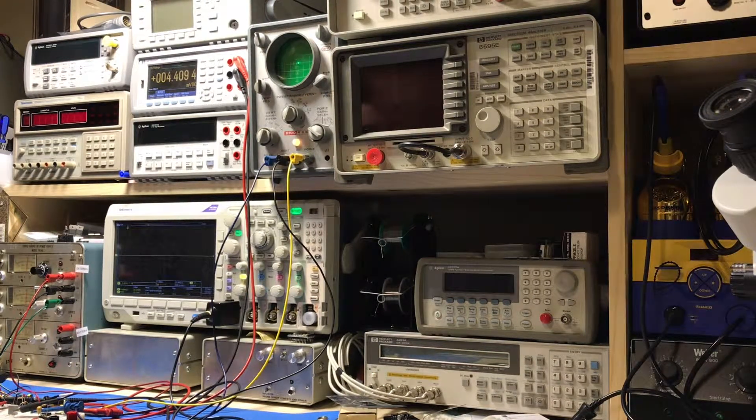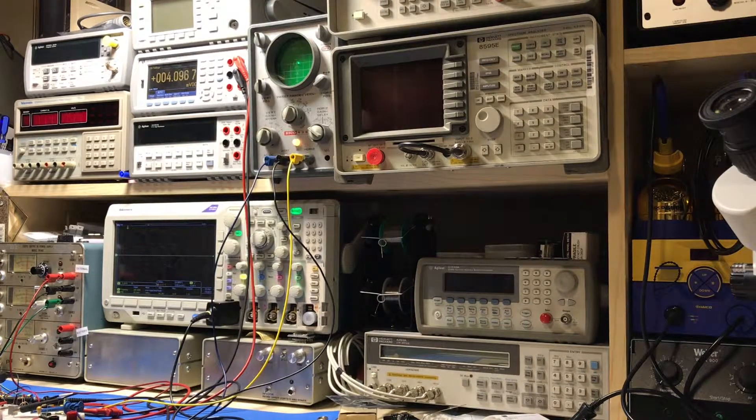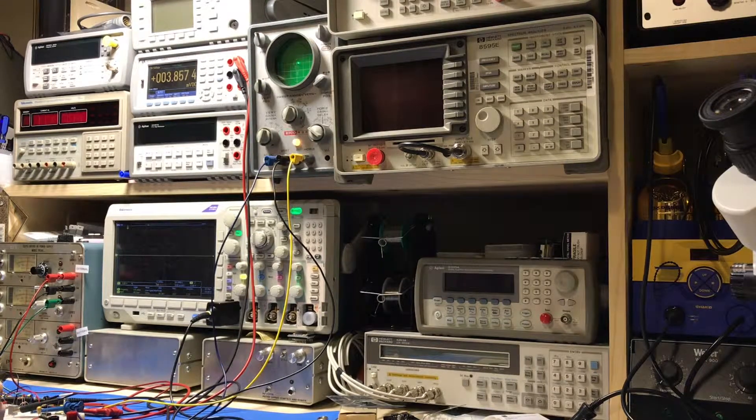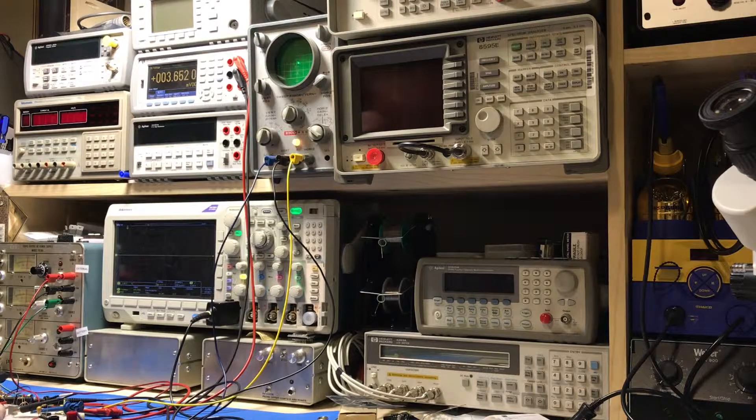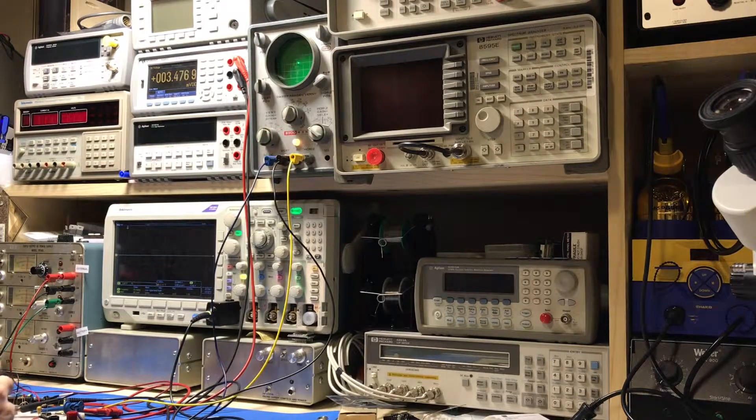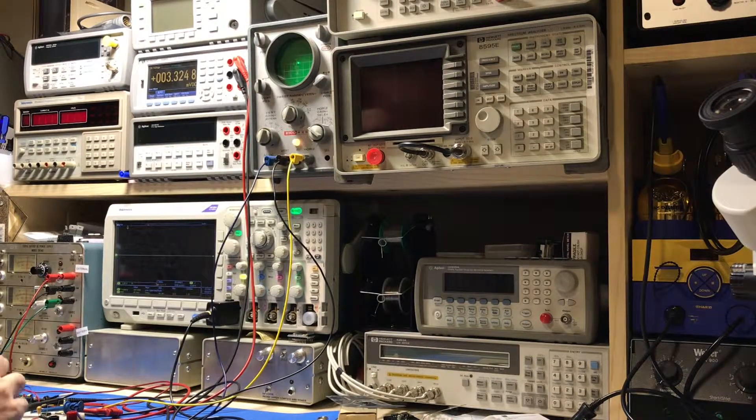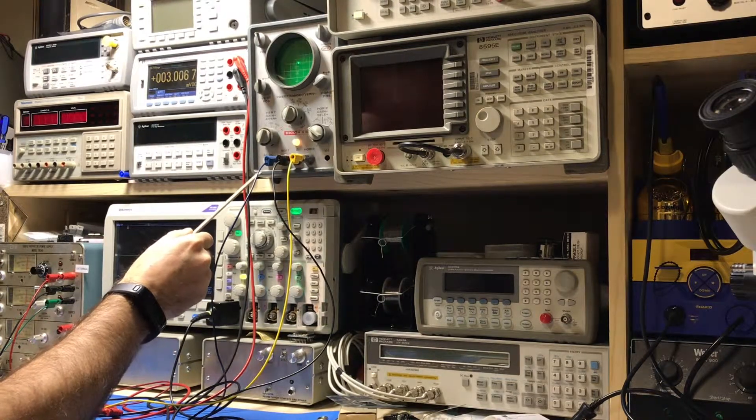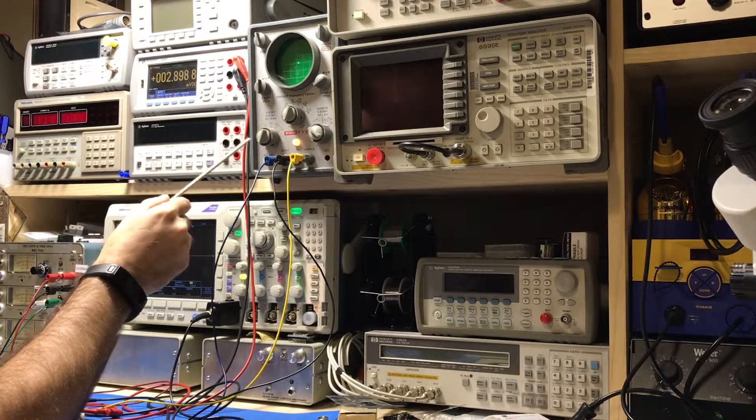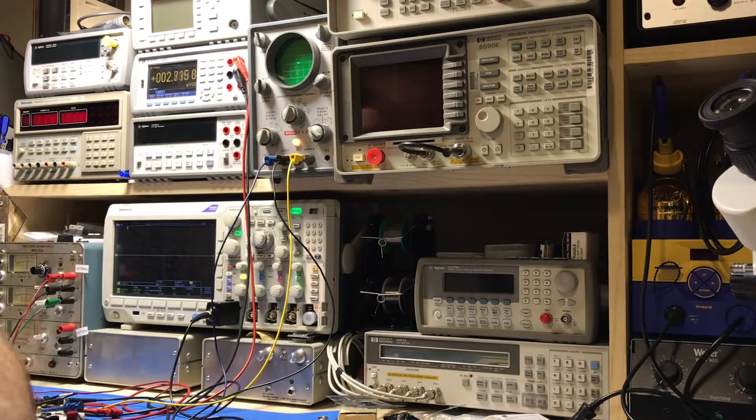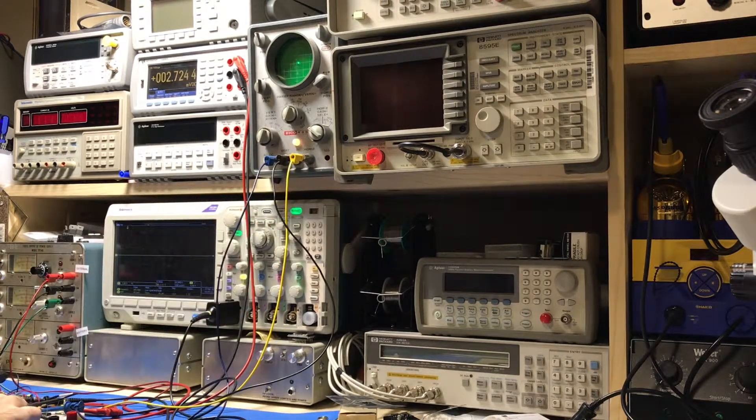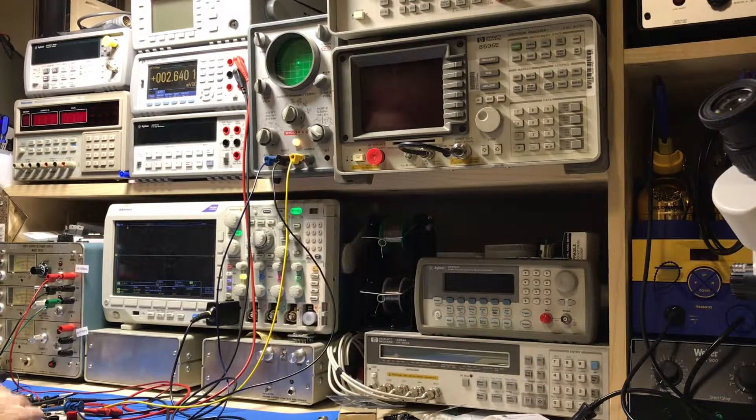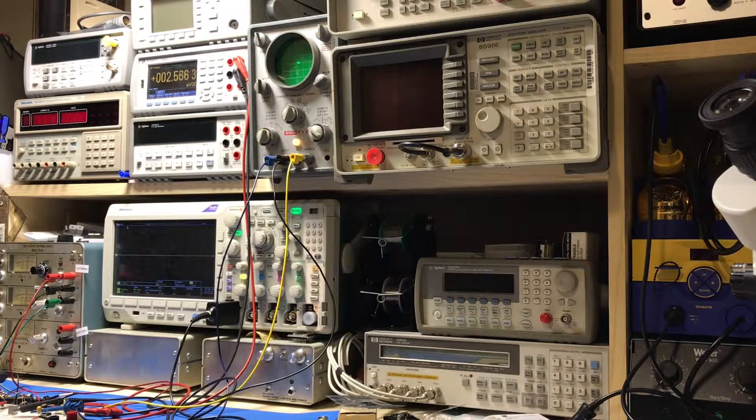All right, so this is the first video of the curve tracer build portion of this series. We've got the oscilloscope up here sitting on the shelf, and this is where I'm gonna have it. It's pretty easy to see and it's hooked up to the curve tracer circuit which is on the breadboard right now, right here.